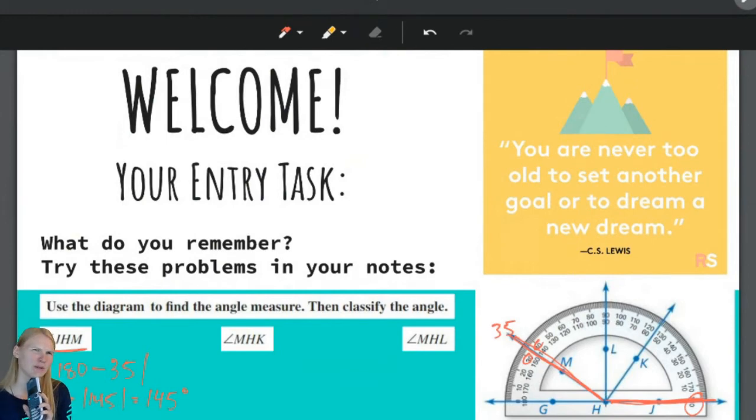Absolute value just makes things positive. So we have 145 degrees. Is that acute? Is it obtuse? It's obtuse. Because it's bigger than 90, but less than 180.